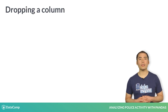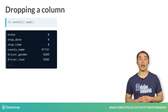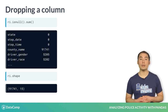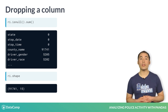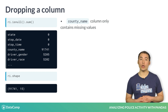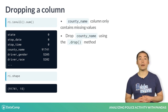Let's compare these missing value counts to the data frame's shape. You'll notice that the county_name column contains as many missing values as there are rows, meaning that it only contains missing values. Since it contains no useful information, this column can be dropped using the drop method.